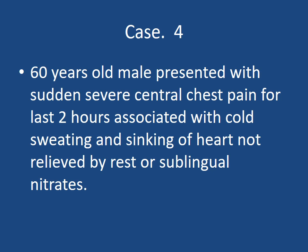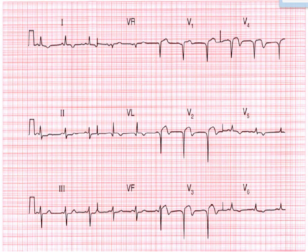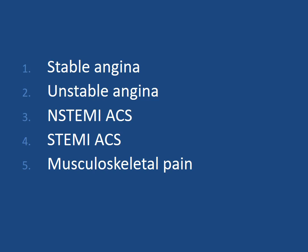Case 4: A 60-year-old male presents with sudden severe central chest pain for the last 2 hours, associated with cold sweating and sinking feeling, not relieved by sublingual nitrates. Pulse 90 per minute, blood pressure 180/90. JVP is raised and respiratory examination shows bilateral basal fine crackles. ECG shows typical ST segment elevation in V1, V2, V3, and V4. Cardiac enzymes are raised and Troponin T is positive. The diagnosis is STEMI — ST segment elevation acute coronary syndrome.